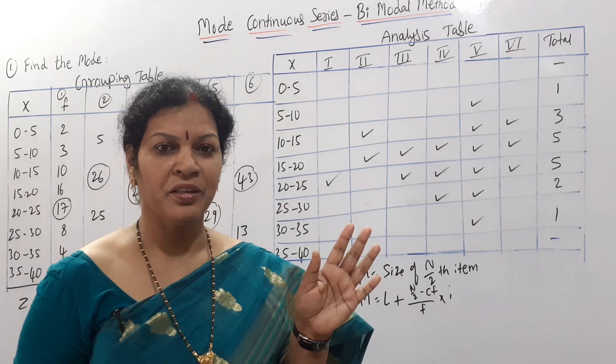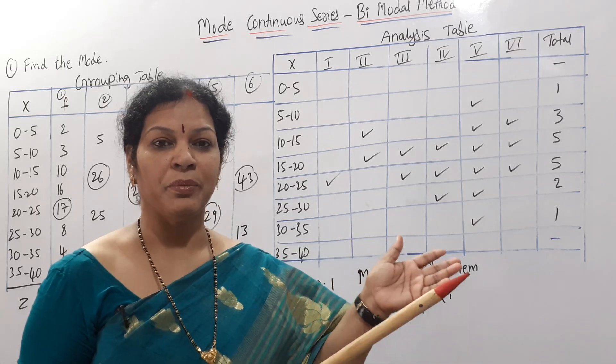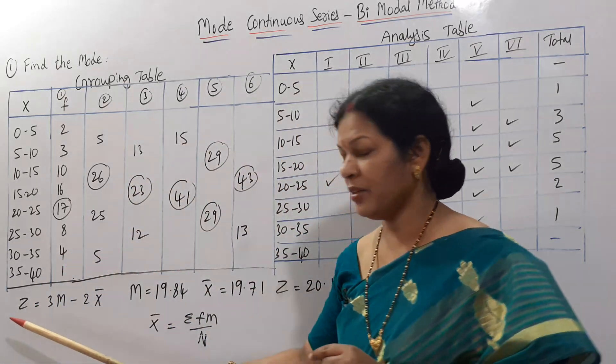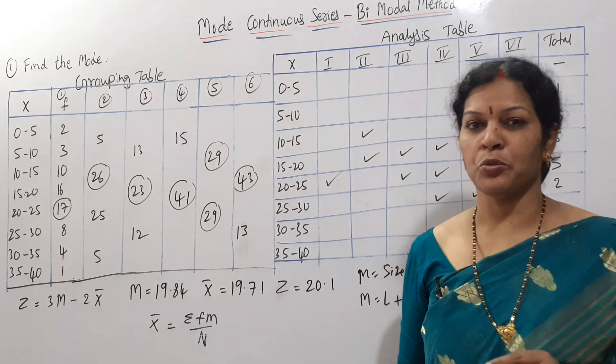The formula for the bimodal method is: Mode is equal to 3 median minus 2 mean.